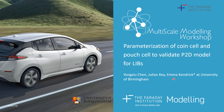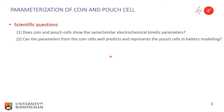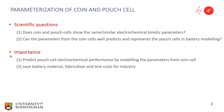The VC here is about the parameterization of coin cells and pouch cells to validate P2D models for lithium-ion batteries. In industry, there are different types of cells, like the coin and pouch. The scientific question is: for the same components, do the coin cell and the pouch cell show the same or similar electrochemical parameters? If so, can parameters from the coin cell predict the pouch cell behavior in modeling?